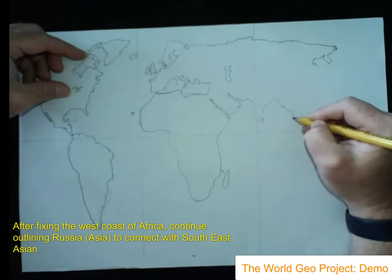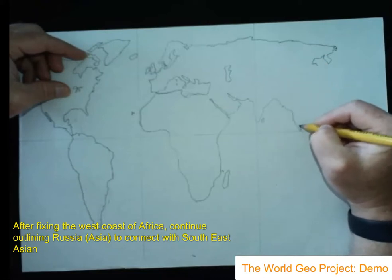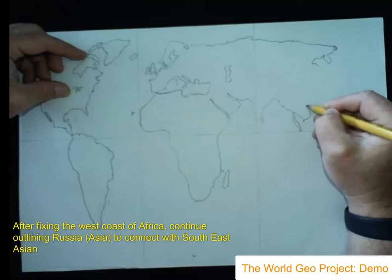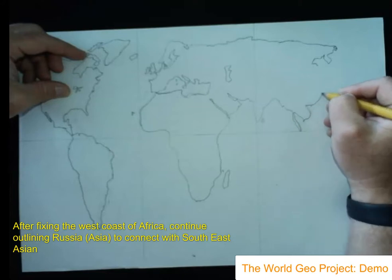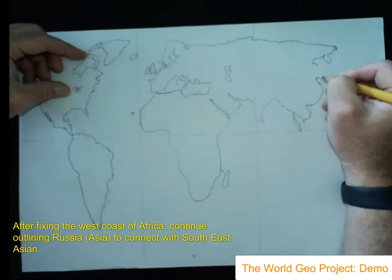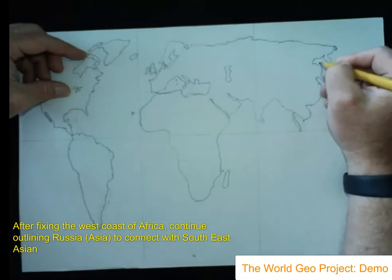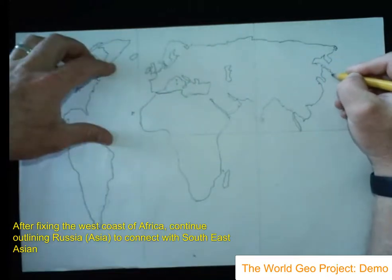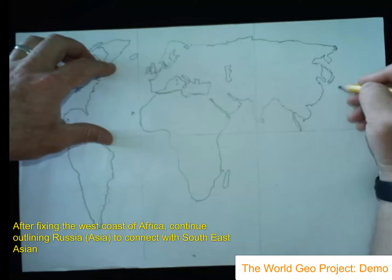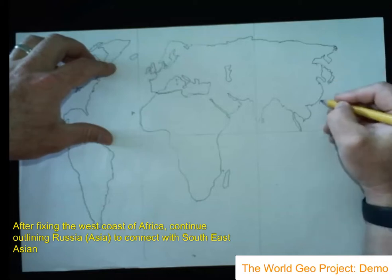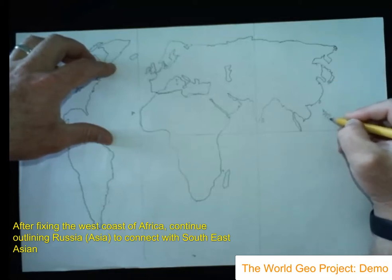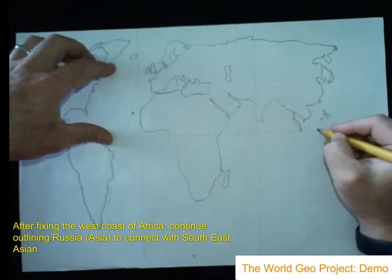I make sure to add in the major lakes of the world — the five Great Lakes in North America and the large lakes in Asia. I could also add in the African Great Lakes in Central Africa around Tanzania, Kenya, and the Central African Republic.